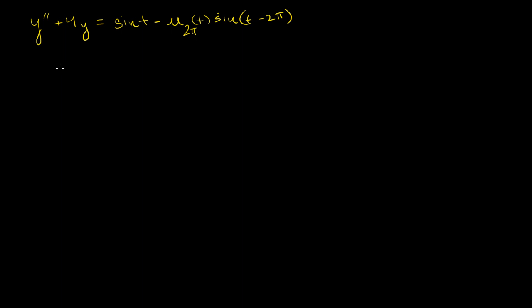Let's solve this differential equation. You can view this as a forcing function — a weird forcing function being applied to some weight. The second derivative with respect to time is the acceleration, so the mass would be 1, and the 4y term is probably some type of spring constant. I won't go into the interpretation now; let's just solve it.